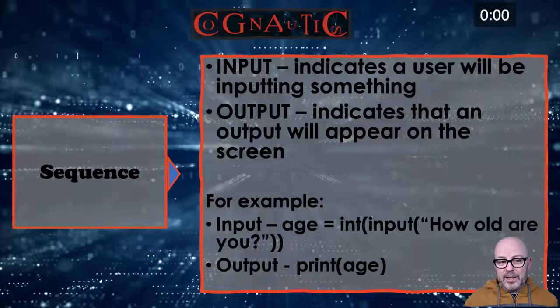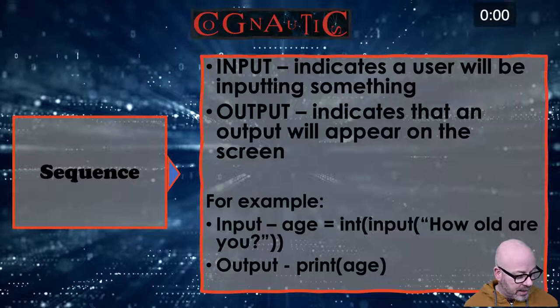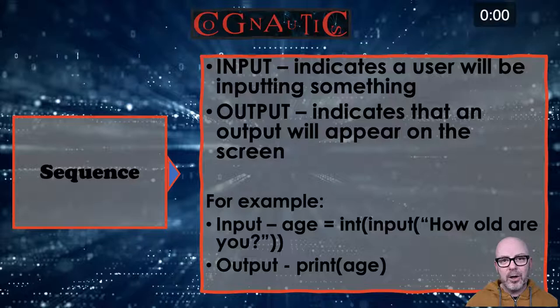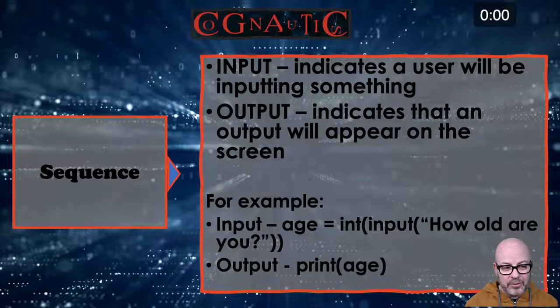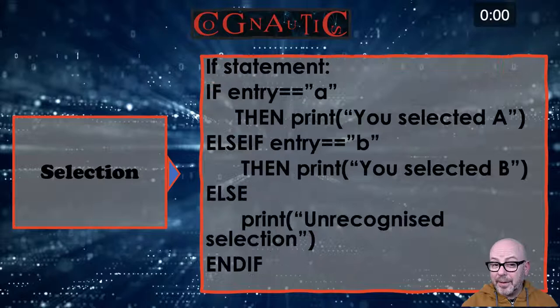A quick recap on sequence: you input something and output it on screen. Input age = input('how old are you?') and print age. Sequence is the idea that code starts at line one and runs through to the end unless you interrupt the flow using a construct like selection or a while loop. You've got selection and iteration as the two constructs that disrupt the flow of the program.